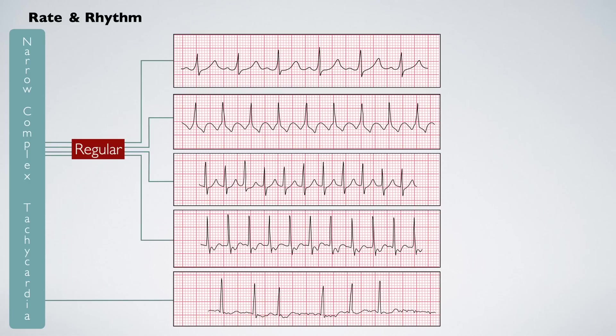By identifying a few simple features, you'll be able to clinch the diagnosis. If the rhythm is regular, the P-waves are upright, and a single P-wave precedes each QRS complex, you have a sinus tachycardia.